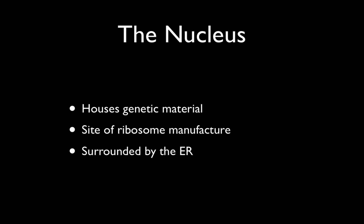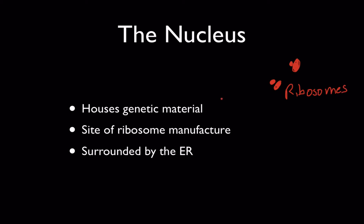The second thing that the nucleus is known for is it's where ribosomes are manufactured. These little structures each have two parts: a large subunit and a small subunit. Ribosomes are born, or made, inside the nucleus. A part of the nucleus called the nucleolus is where this happens, which we'll talk about in just a second. Finally, the nucleus is very tightly surrounded and intimately connected to the endoplasmic reticulum, and we'll look at that a little bit later also.